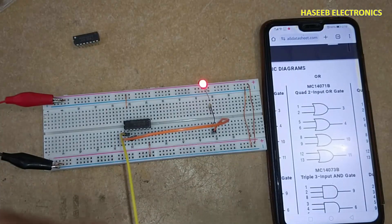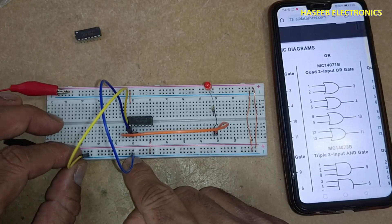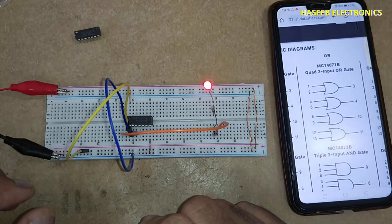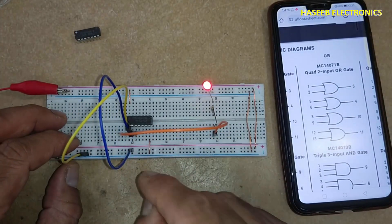Both inputs low, output low. Any one input high, output high. First or second high, output high.